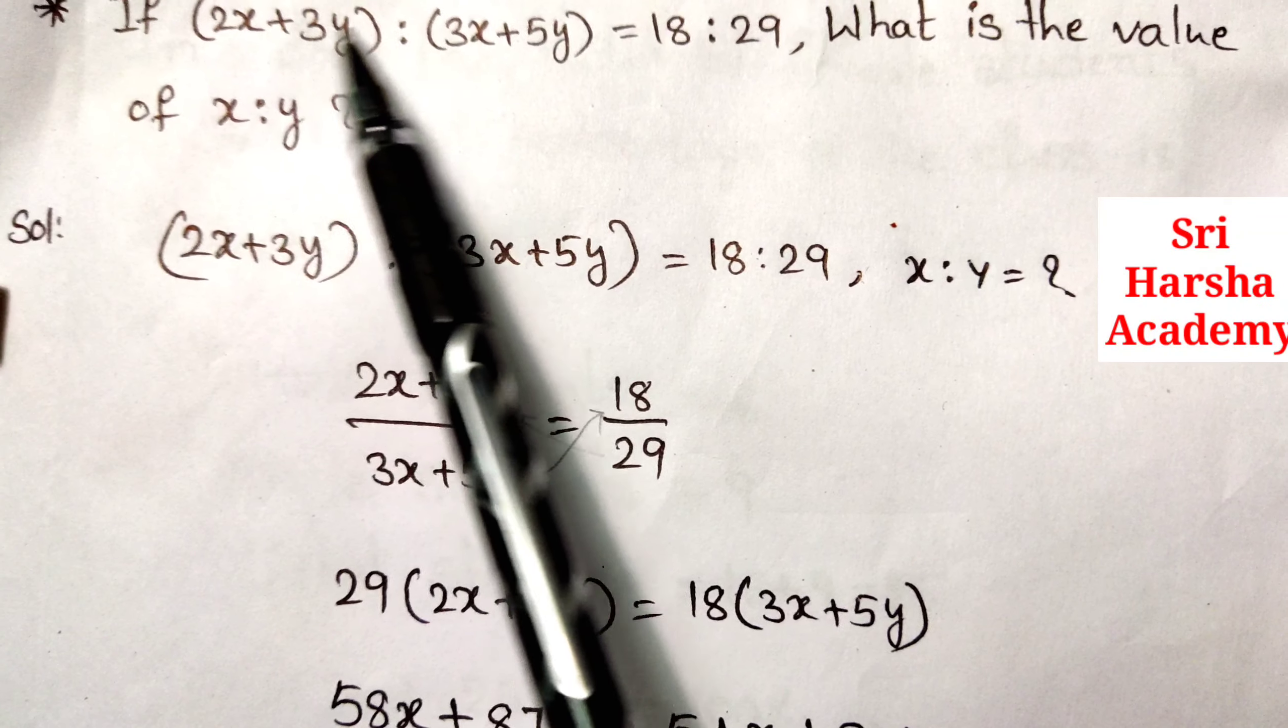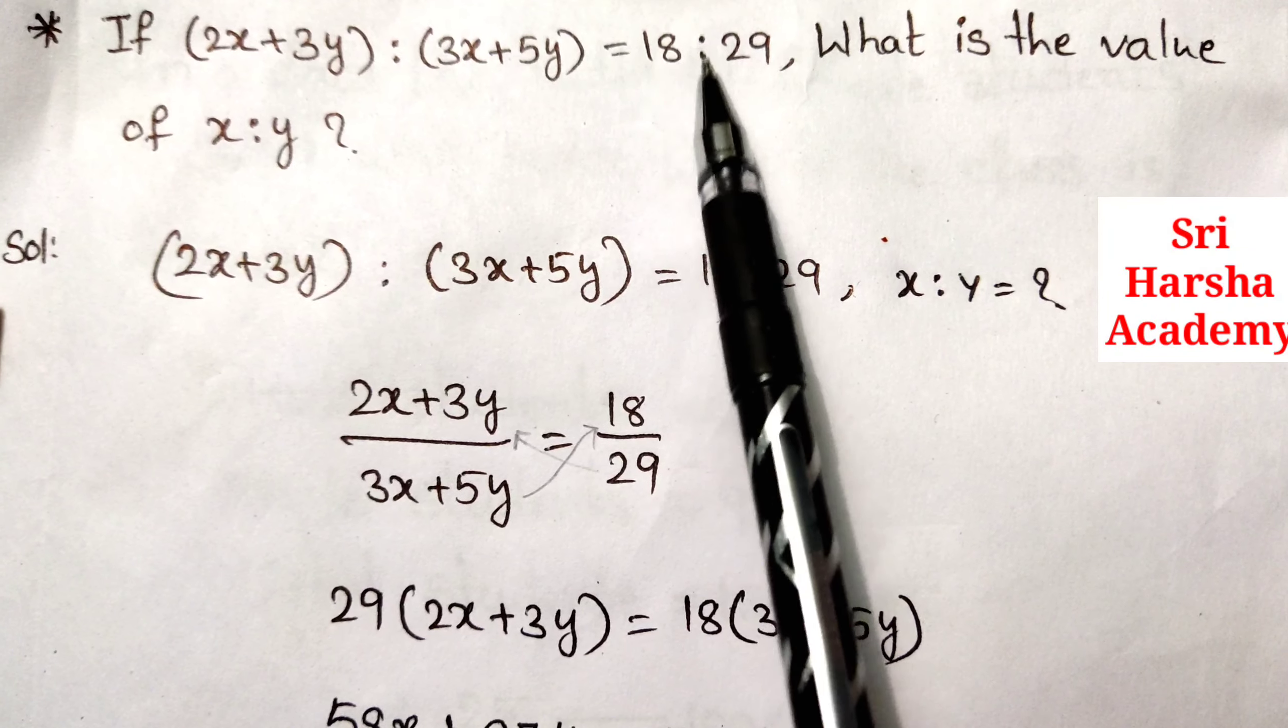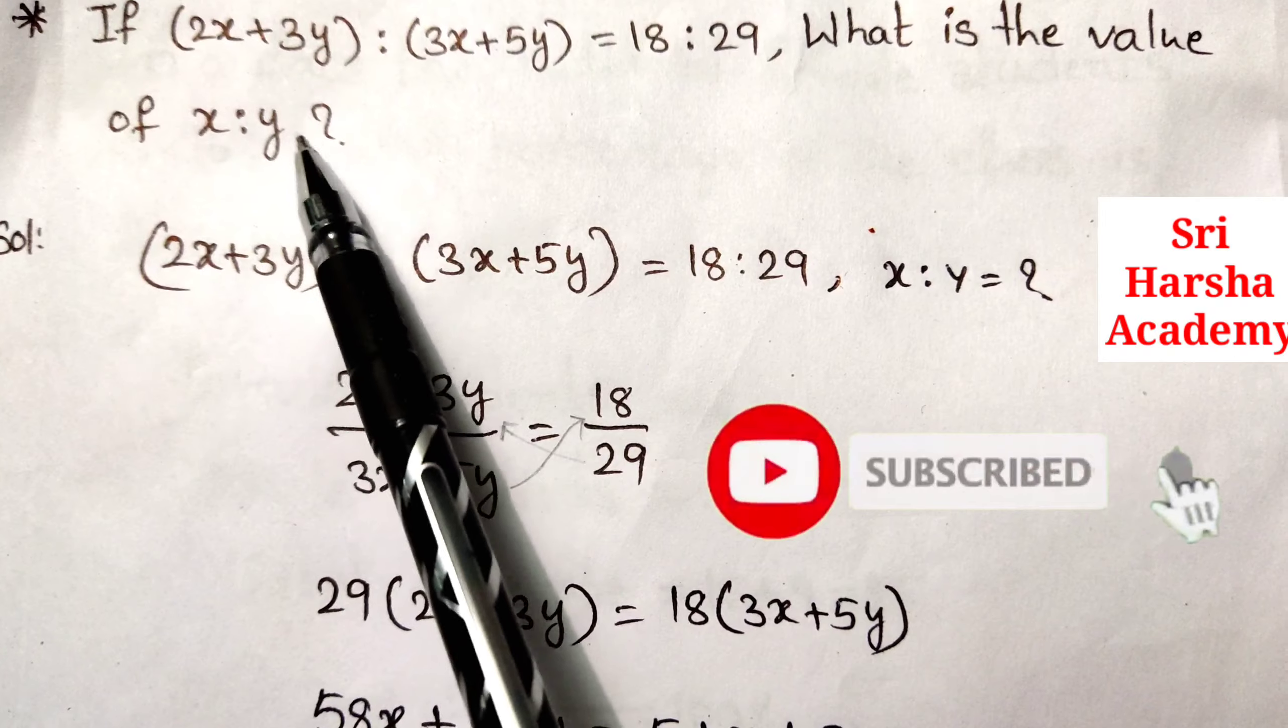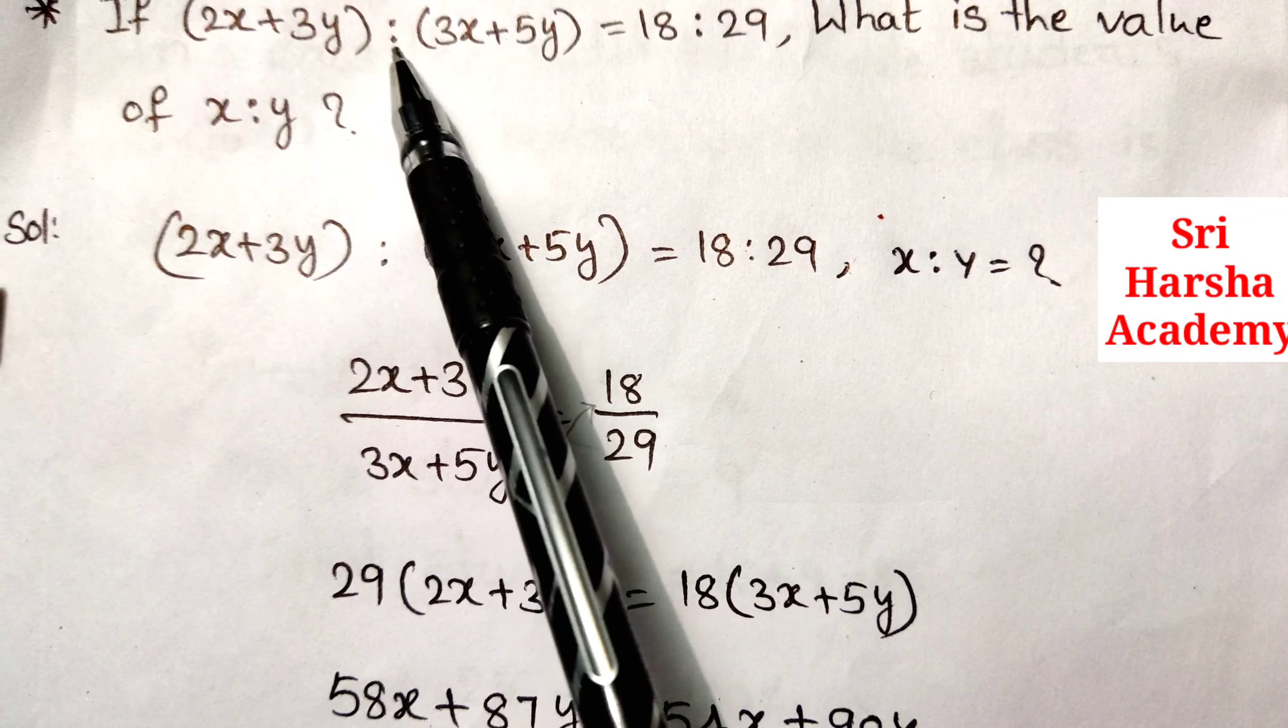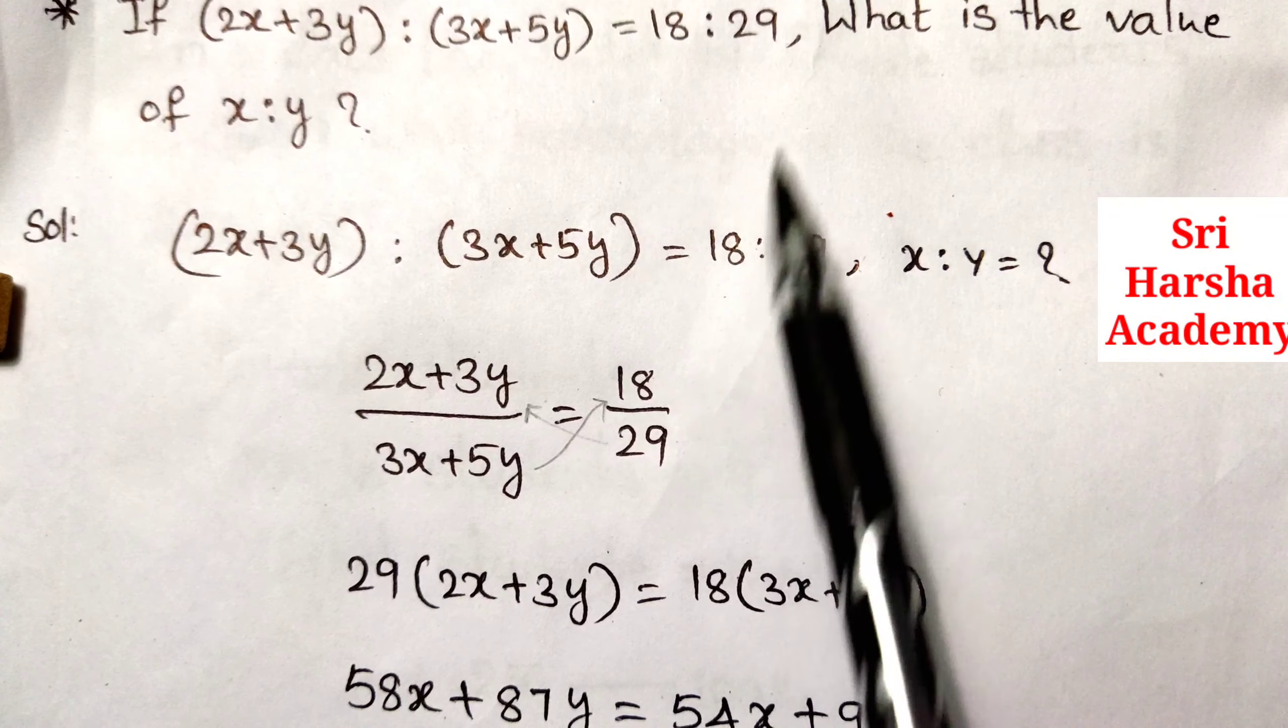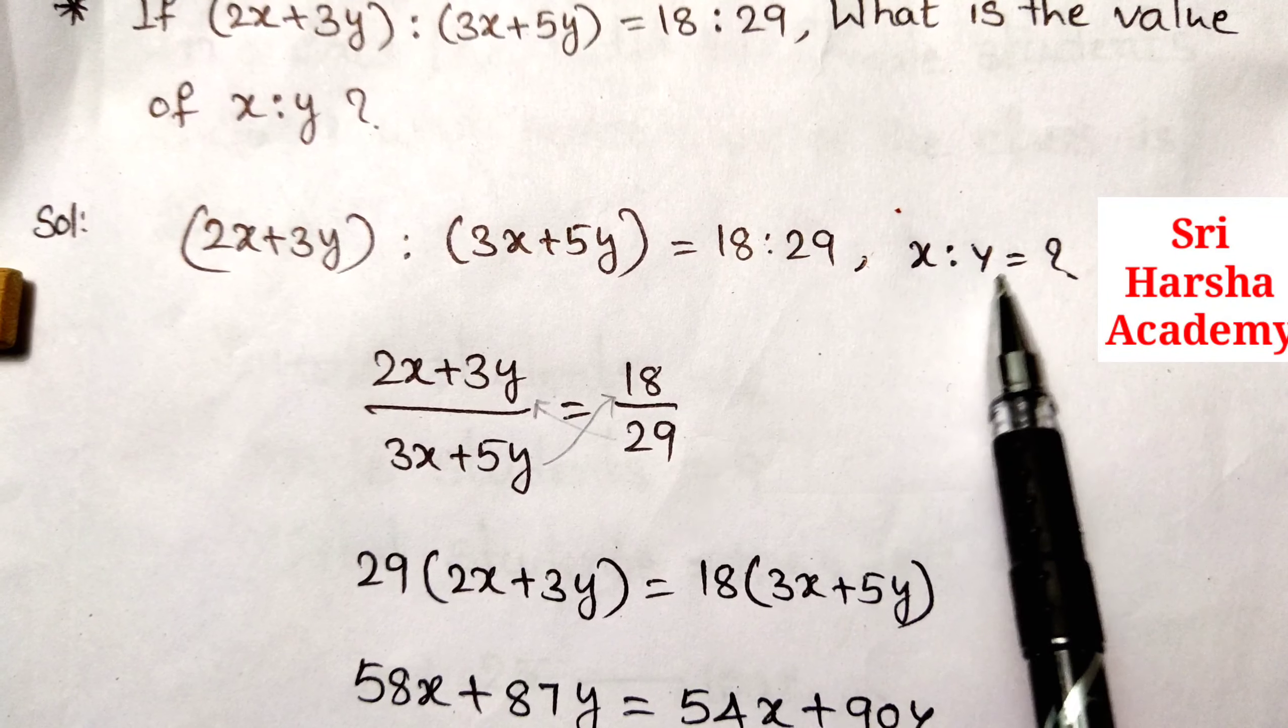If 2x plus 3y is to 3x plus 5y is equal to 18 is to 29, what is the value of x is to y? Solution: In this question, given 2x plus 3y is to 3x plus 5y is equal to 18 is to 29, then we have to calculate x is to y ratio.